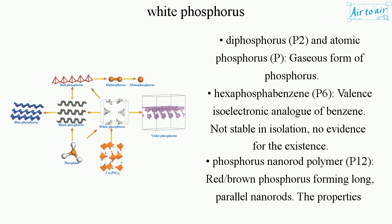Phosphorus nanorod is a polymer (P12), a red-brown phosphorus forming long parallel nanorods. Its properties are distinct from those of red phosphorus.